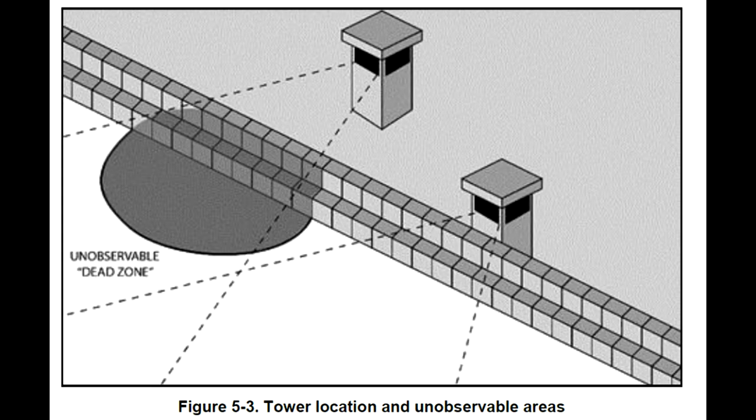Image. Diagram of tower location and unobservable areas, from the Base Camp's manual. Image description. From ATP 3-37.10-mcrp 3-40d.13 Base Camps. A diagram of observation positions, on a wall noting how towers, placed flush with the wall, avoid dead zones, while still benefiting from the protection of the barrier, which could be made of many materials, including HESCO barriers, but also stone, earthwork, concrete, etc. End of image description.